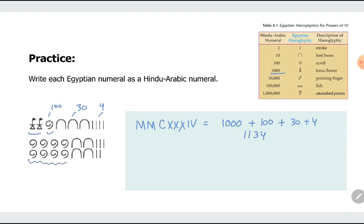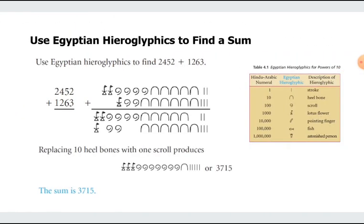So we have here on the second one, we have 8 scrolls, that's 800. And here, we have 4 heel bones, that's 40. And then 5 strokes, so we have 845 in Hindu Arabic. Wait, I made a mistake here. Times 2. This is multiplied by 2. So 2,134.